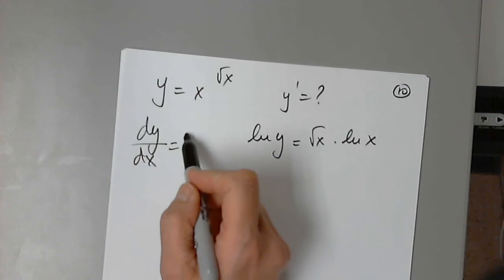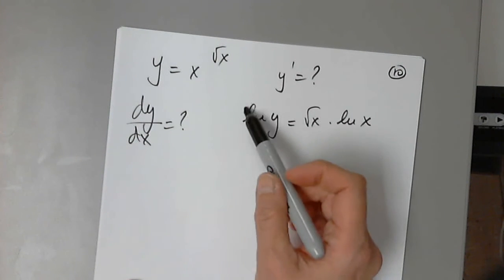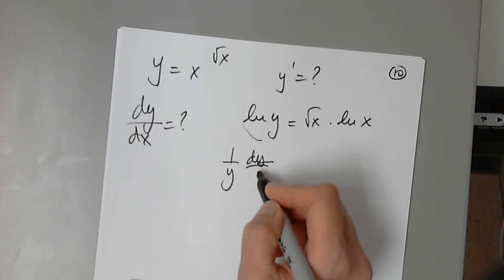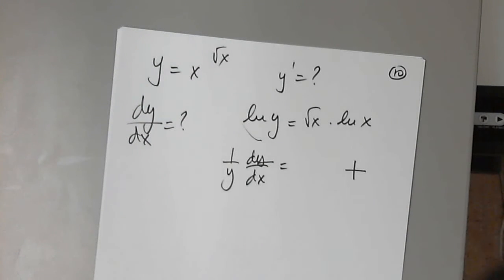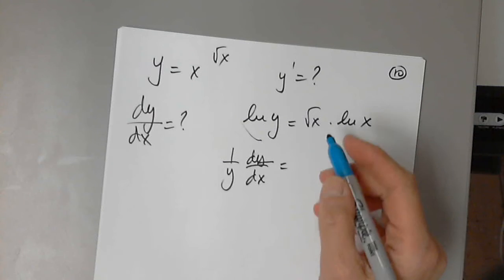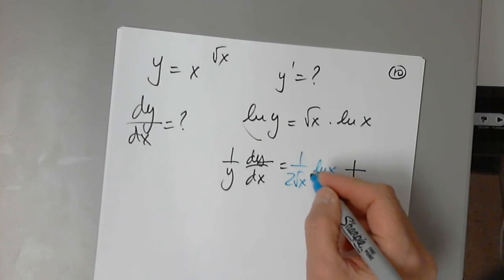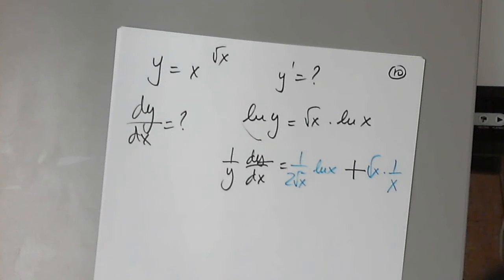And dy over dx will be: I differentiate the left-hand side, I get 1 over y times dy over dx equals — remember this is a product, so I have to get a sum of two terms. I differentiate the square of x, I get 1 over 2 times the square of x times natural log x, and then the square of x times 1 over x.